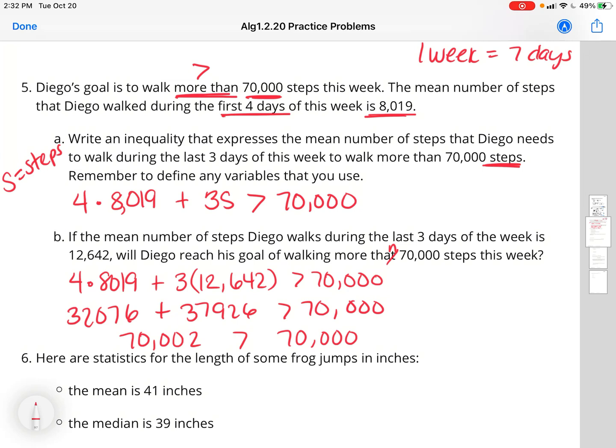And when we add them up, it is just barely over. But it still works. 70,002 steps is greater than his 70,000 step goal.